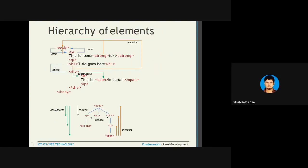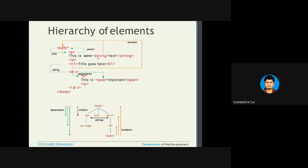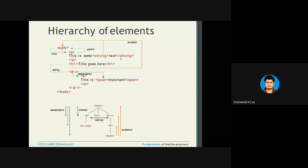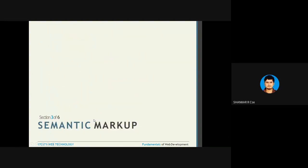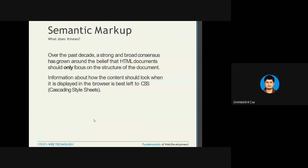This is called an element or tag name, href is called the attribute, and this is called the value. Various nestings: in body you have p, in p you have strong — it should close in reverse order. Open p first, then strong, so close strong first then p. We've also covered H1 through H6 and semantic markup.